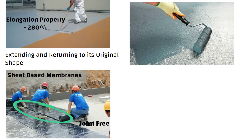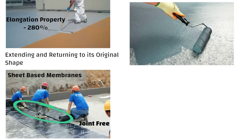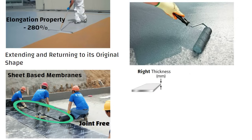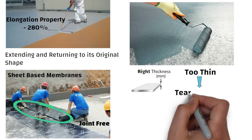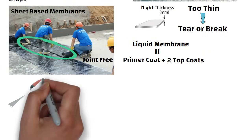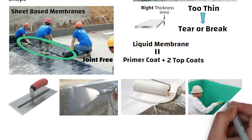However, care must be taken in application to provide just the right thickness. If thickness of coating is too thin then it can tear or break. Liquid membrane is a thin coating which consists of usually a primer coat and two coats of top coats which are applied by using a towel, spray, roller or brush.